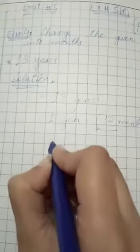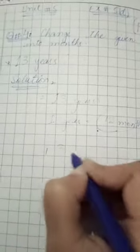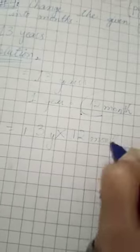We will write 13 and multiply by 12 to convert years into months.